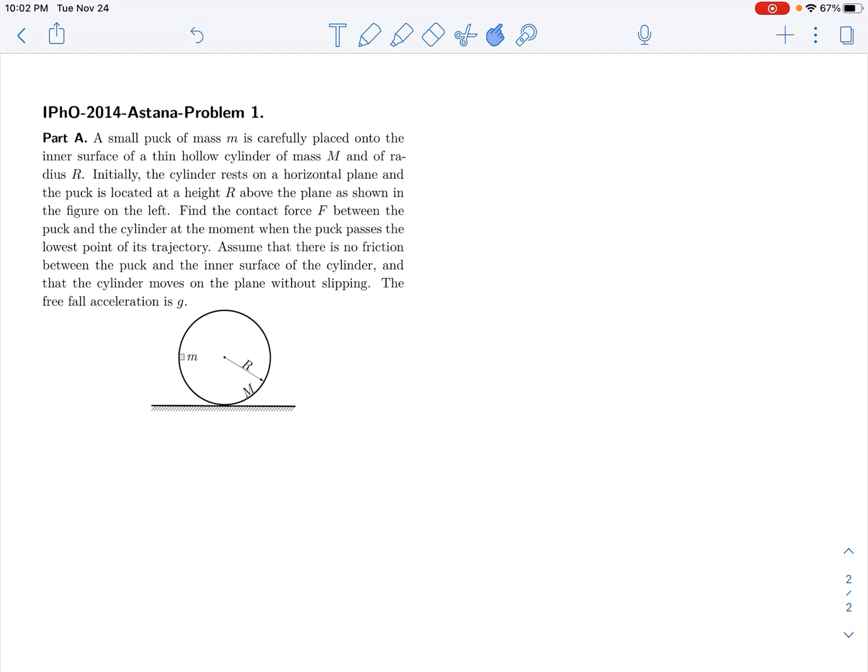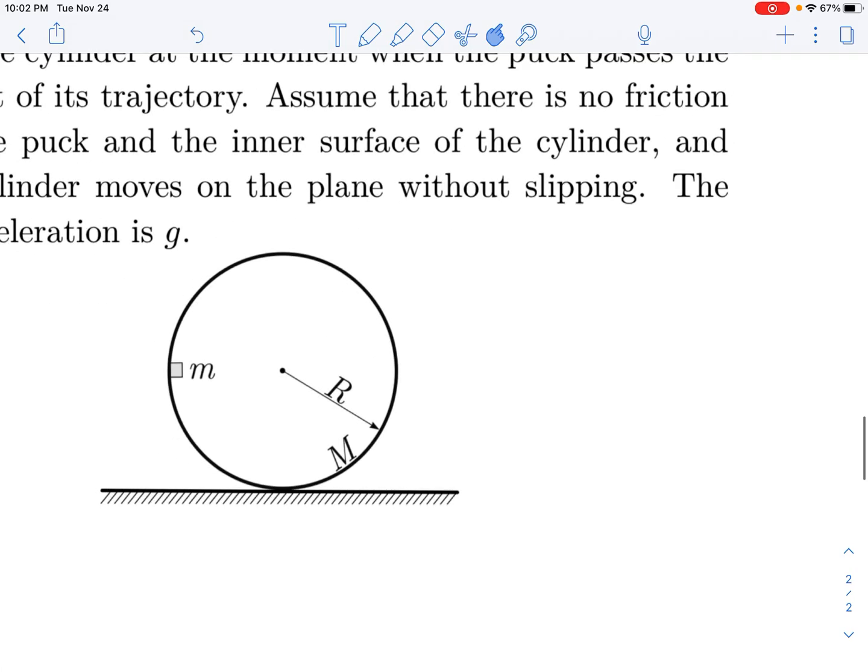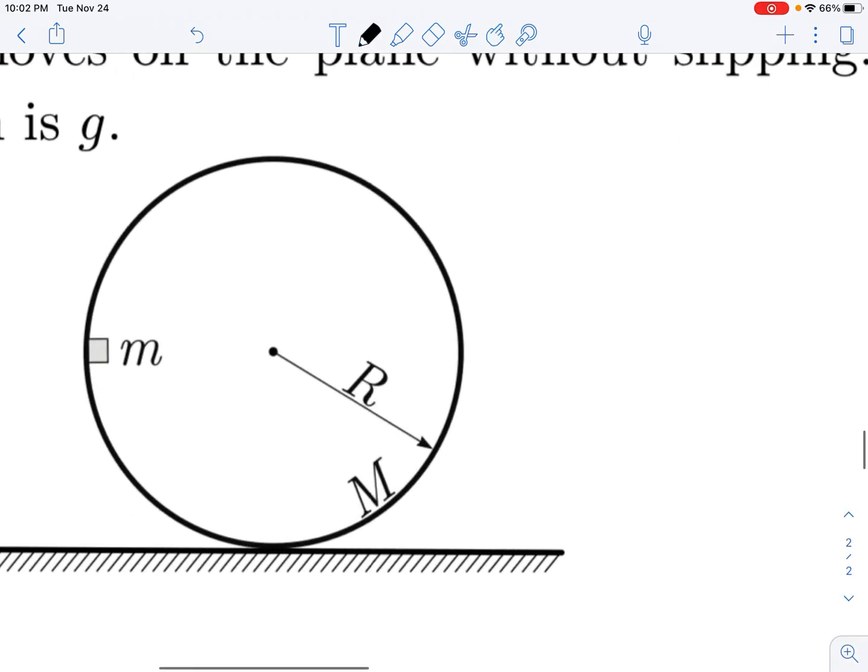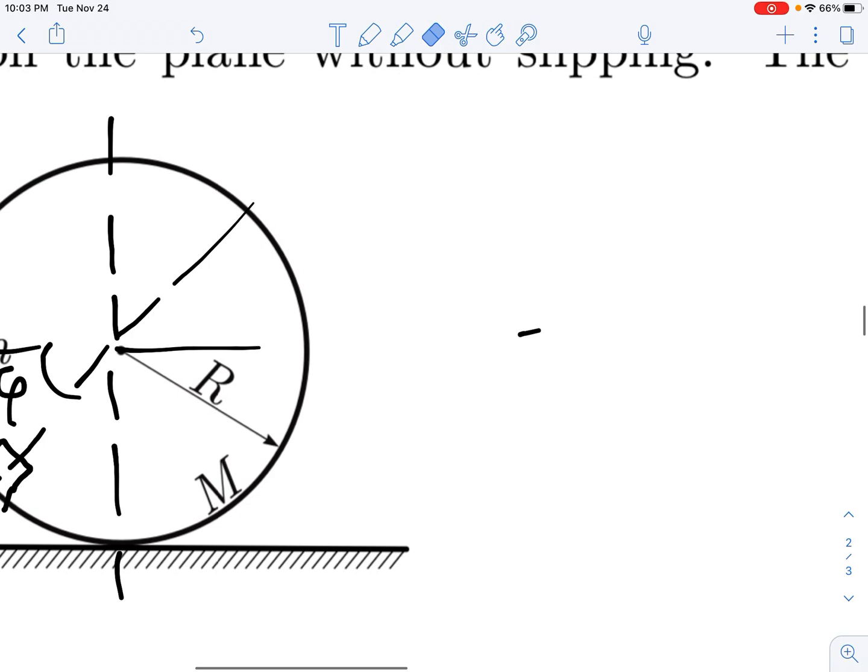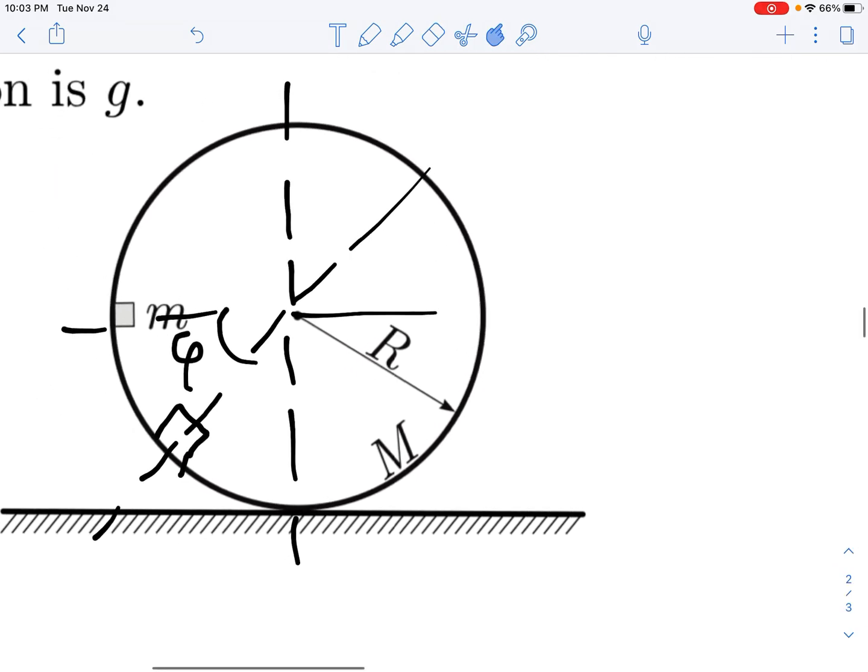Alright, so I assume that you guys have now read the problem and tried it. Now I'm going to discuss the solution with you guys. So let us first draw this symmetry axis about the cylinder. Consider when the mass traverses slightly down and travels through an angle phi.